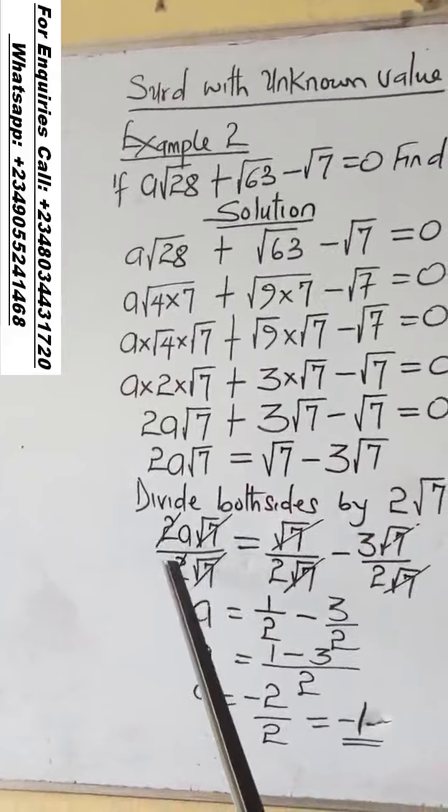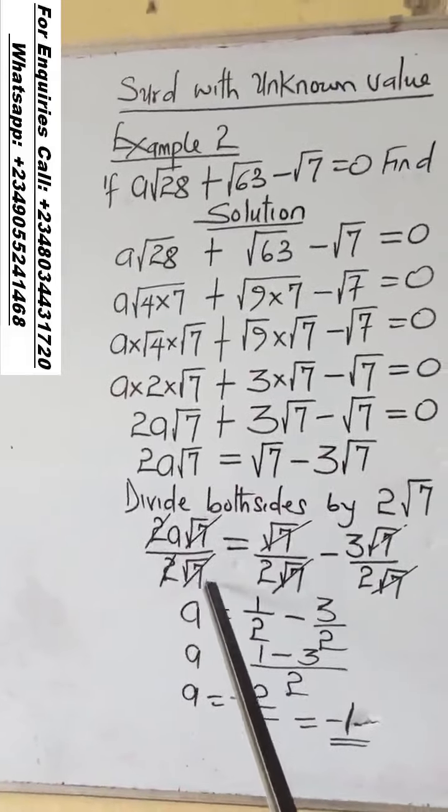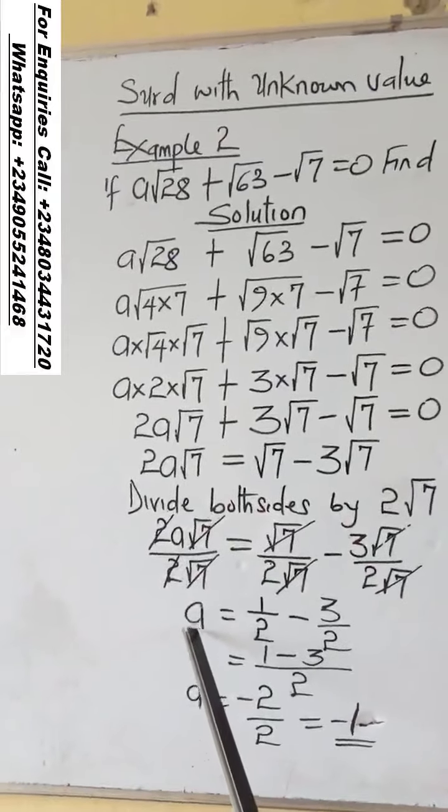So if 2 cut 2, root 7 cut root 7, we will have A, which is what we are looking for.